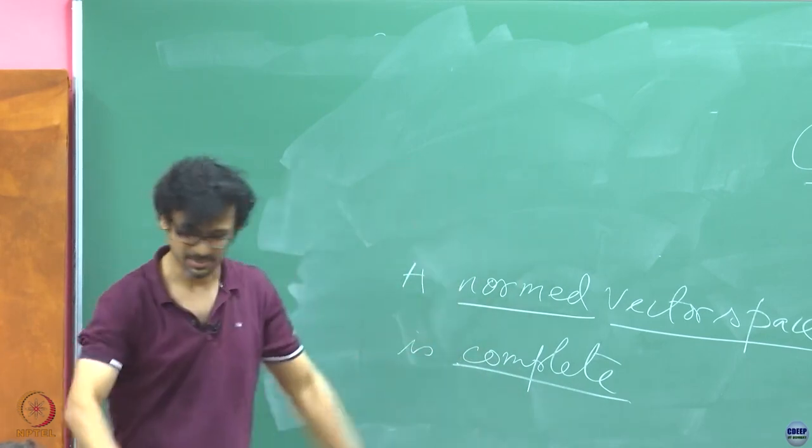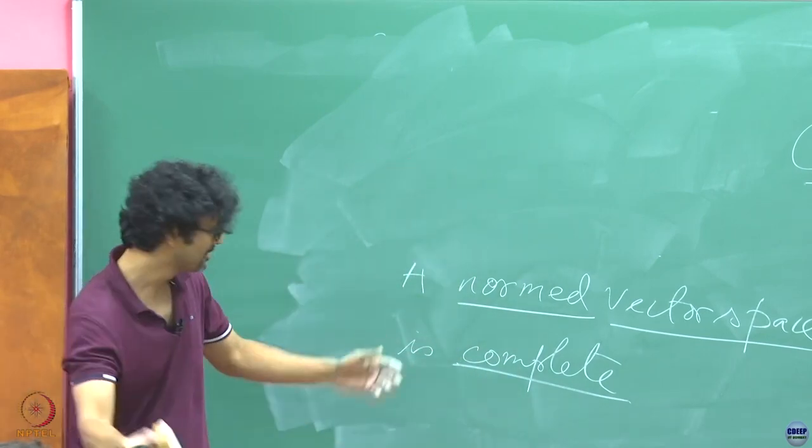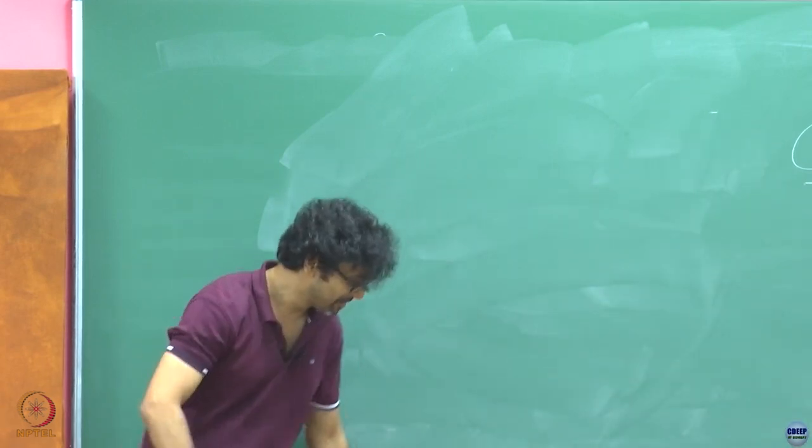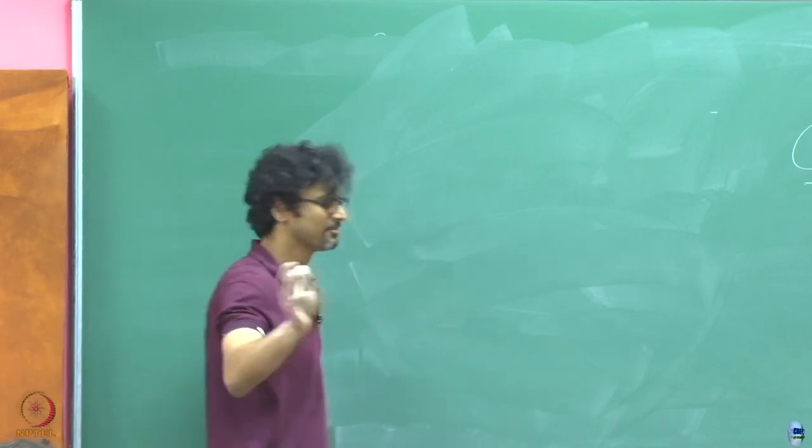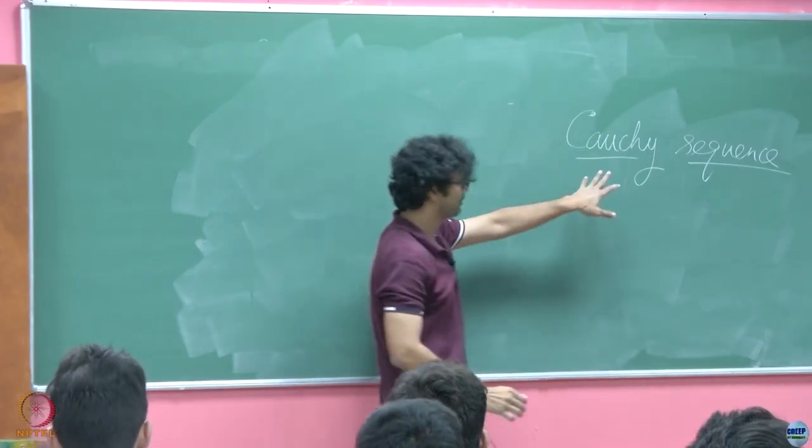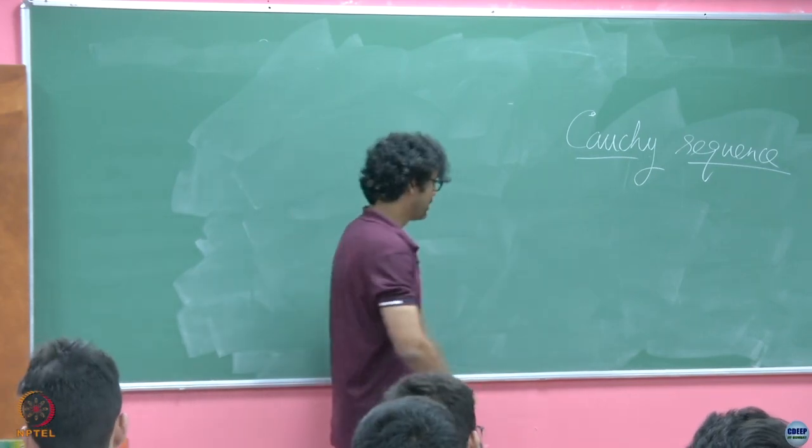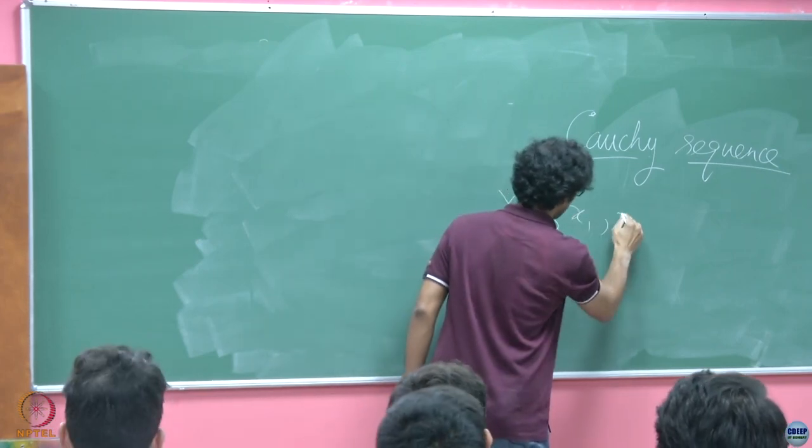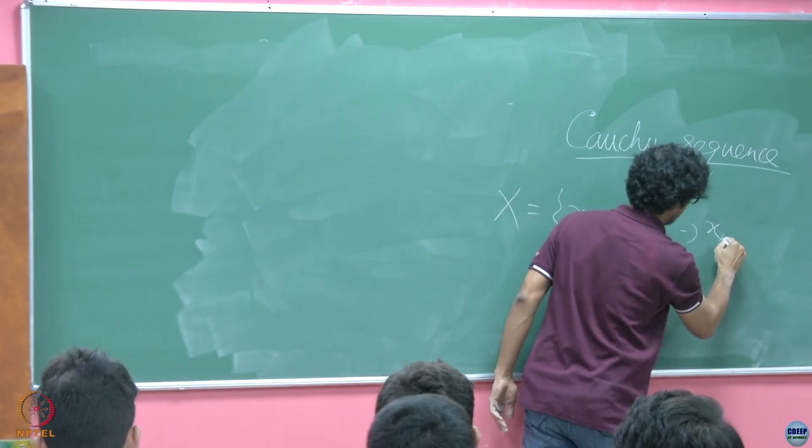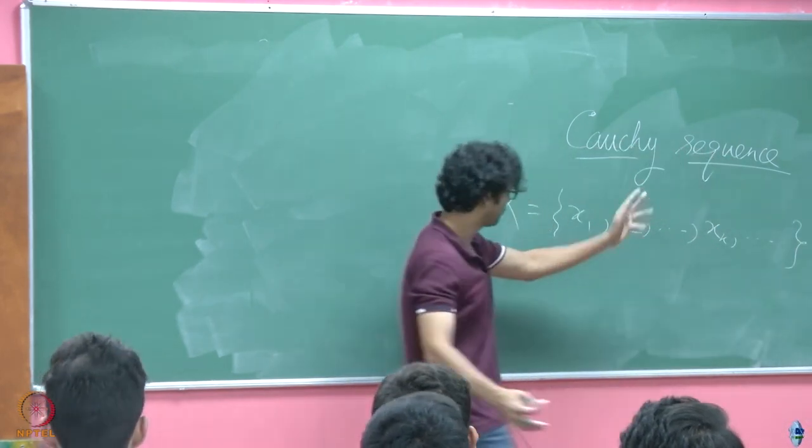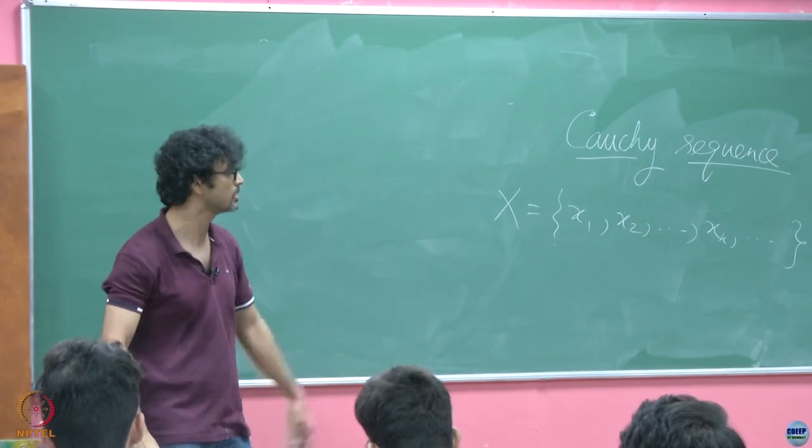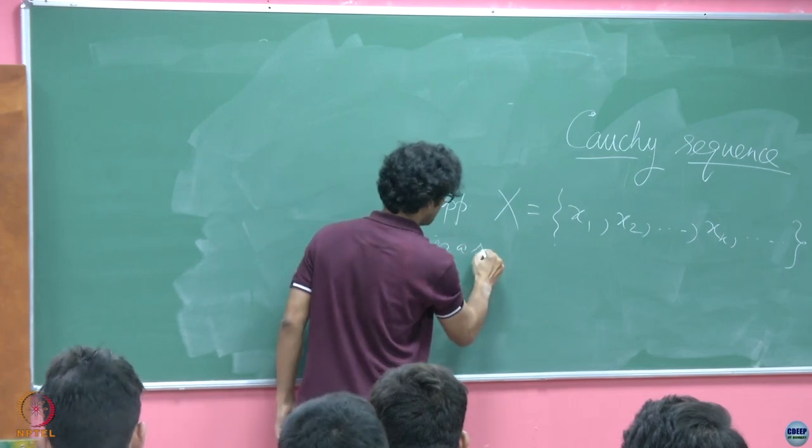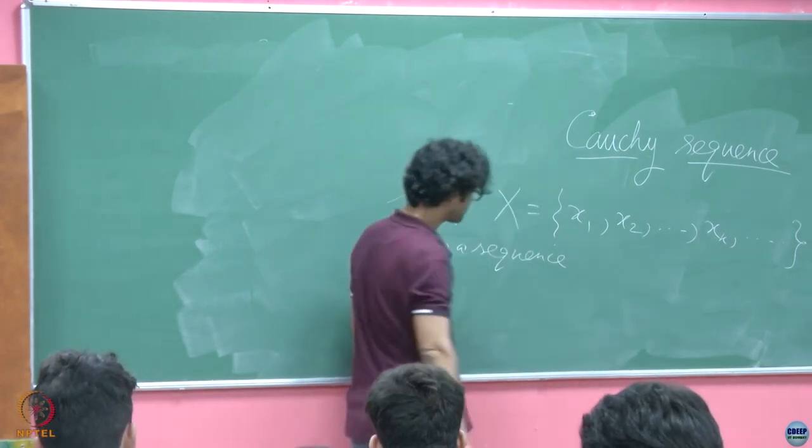I could already see some of you like throwing your hands up in the air and say, oh, here we go again with this Cauchy sequence and completeness. Well, irony is you are in the math department. So, yeah, live with it. So this is the Cauchy sequence. What is the Cauchy sequence then? Here goes. Suppose you have this sequence, some x_k and heaven knows how many terms, probably infinite, but countably infinite terms. Suppose X is a sequence.